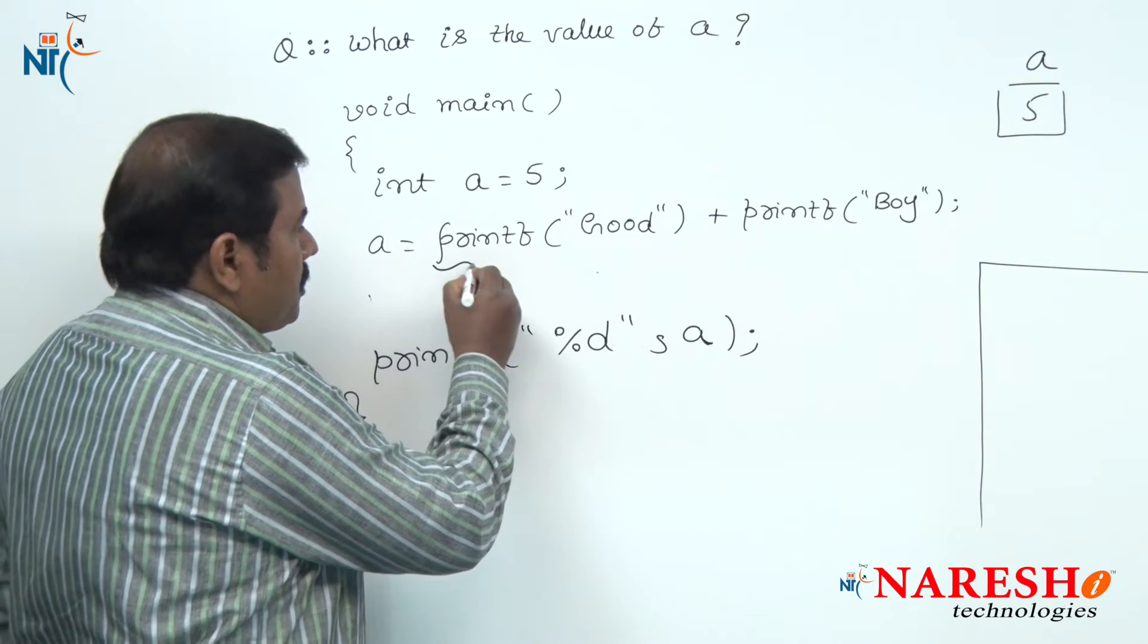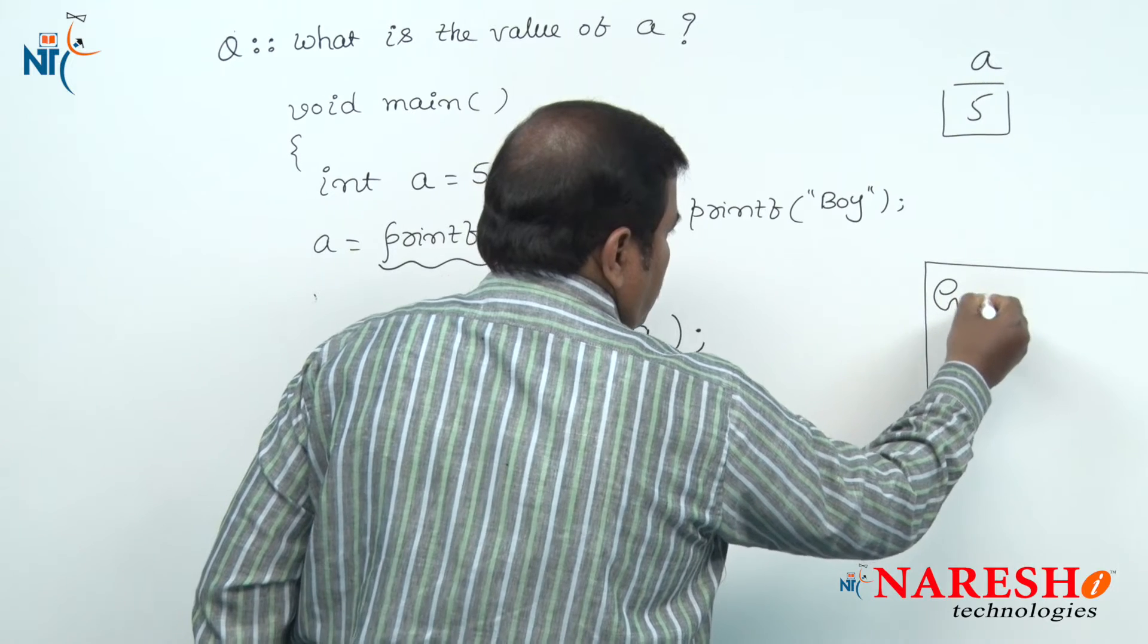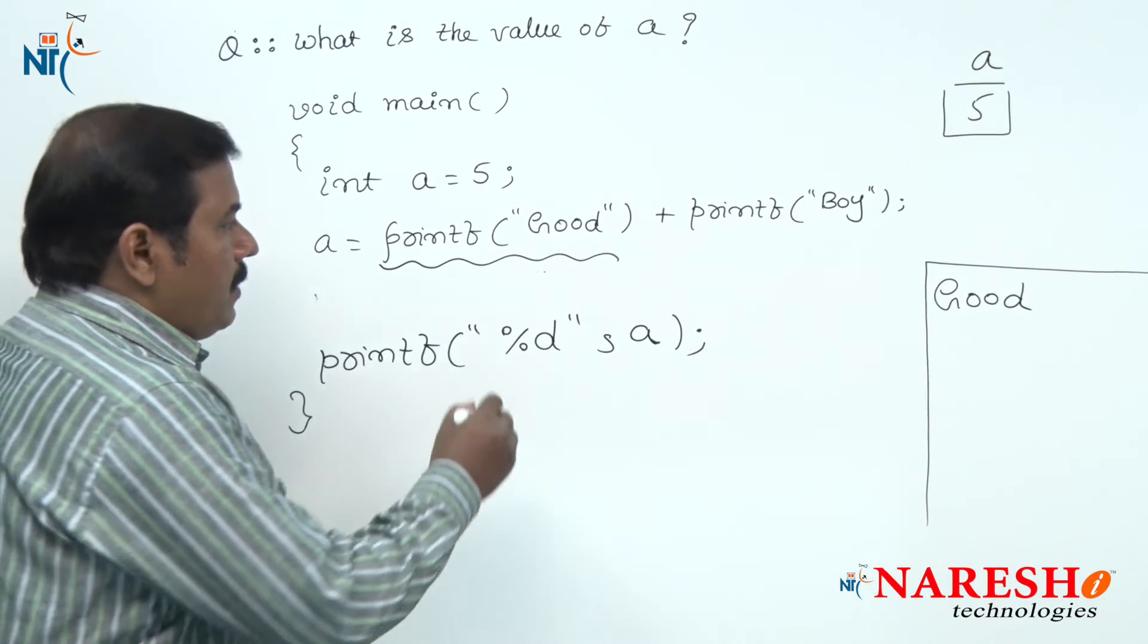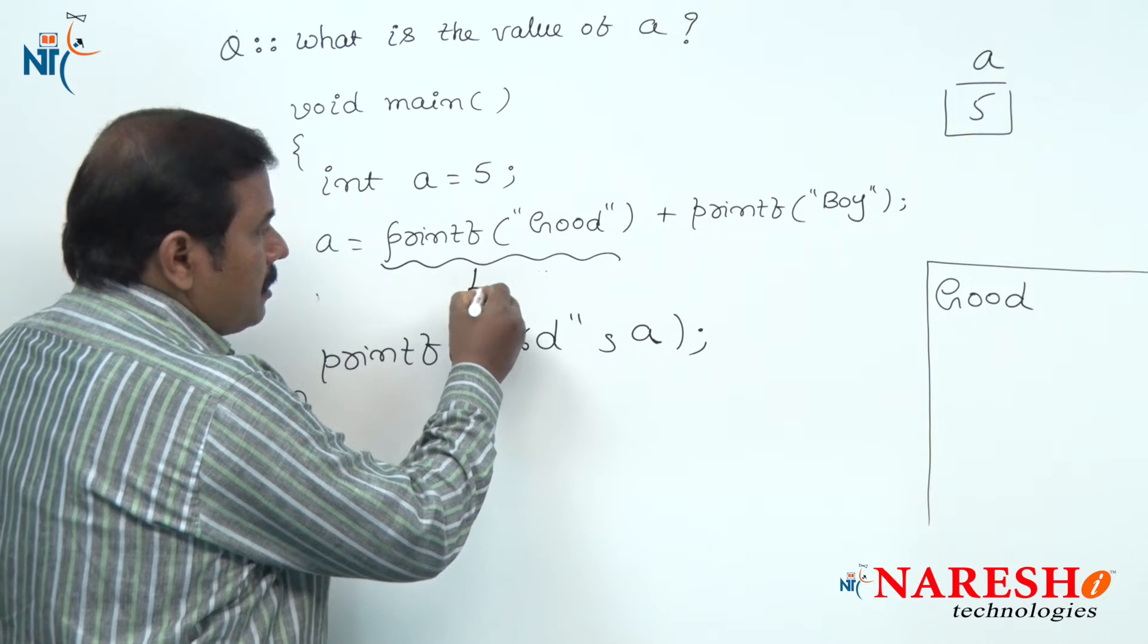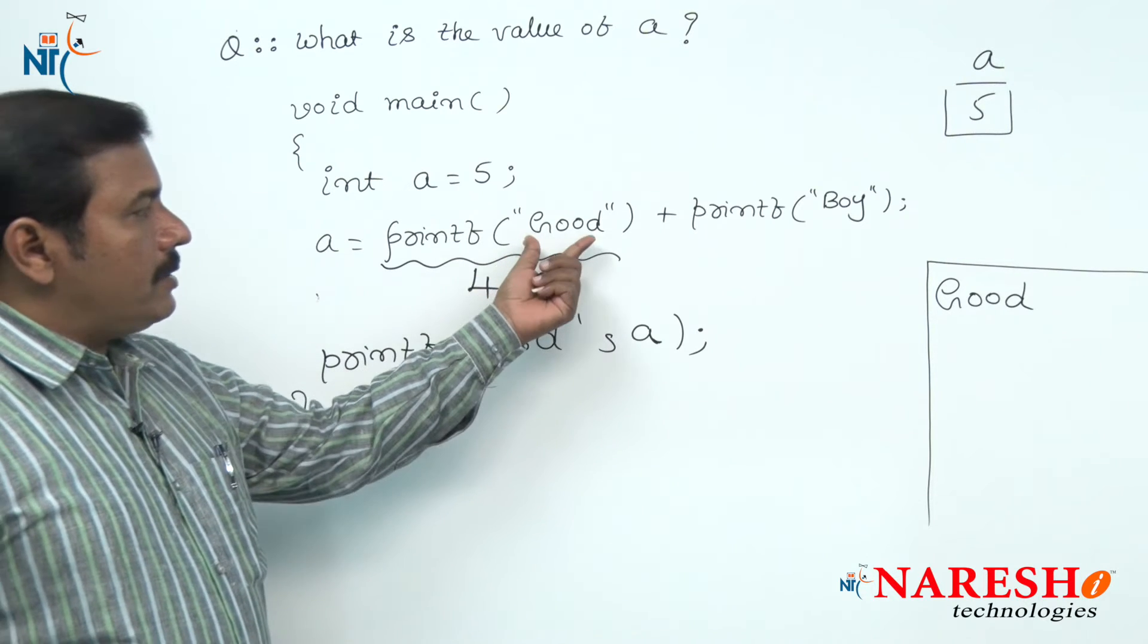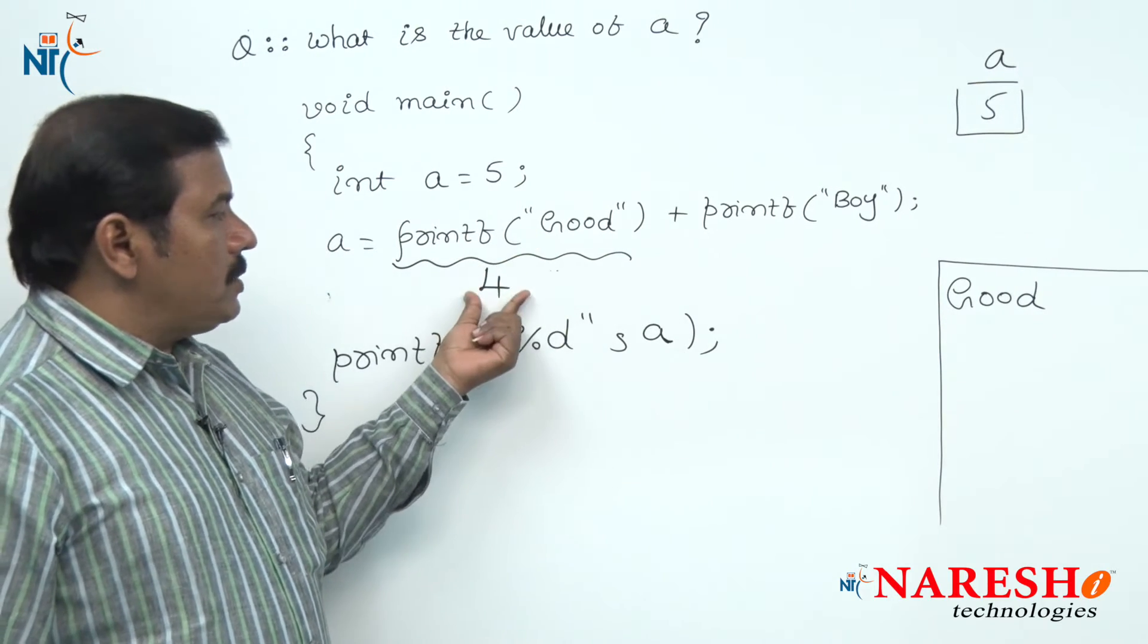This printf function first displays the string "Good" as it is onto the screen, and this function returns the value 4 because the total number of characters printed by printf is 4.